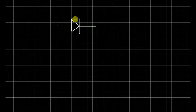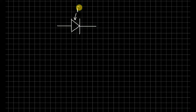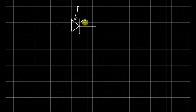This is our P-type. This is our cathode region. This is our N-type. This is the diode symbol.